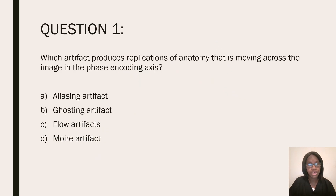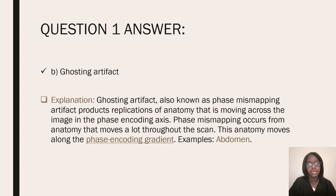For question number one: which artifact produces replications of anatomy that is moving across the image in the phase encoding axis? Is it aliasing artifact, ghosting artifact, flow artifacts, or moire artifacts? The correct answer is ghosting artifact, also known as phase mismapping artifact. It produces replications of anatomy that is moving across the image in the phase encoding axis. Phase mismapping occurs from anatomy that moves a lot throughout the scan — this anatomy moves along the phase encoding gradient. An example of this would be an abdomen scan.